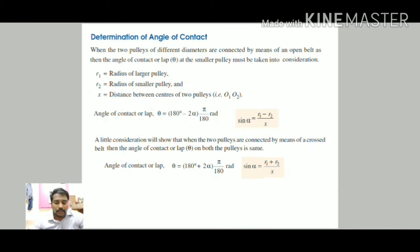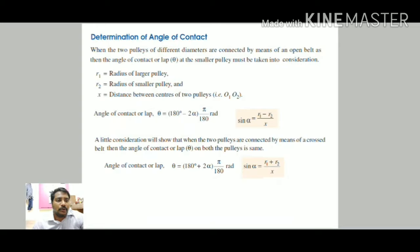To determine the angle of contact, sin α = (R1 − R2)/X for the open belt drive, where X is the center distance. The angle of contact θ (also called the angle of lap) at the smaller pulley must be taken into consideration when two pulleys of different diameters are connected by an open belt. For the cross belt drive, θ = (180 + 2α) × π/180 radians, and sin α = (R1 + R2)/X.